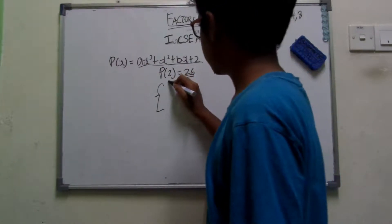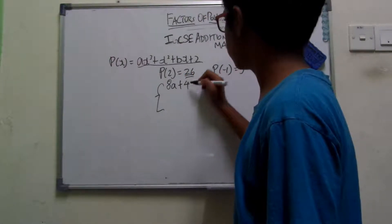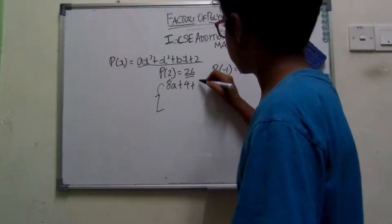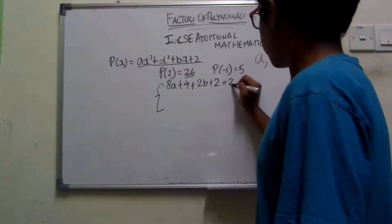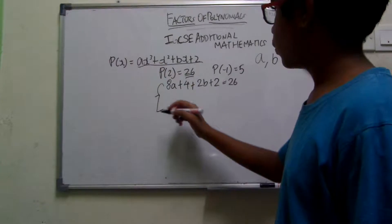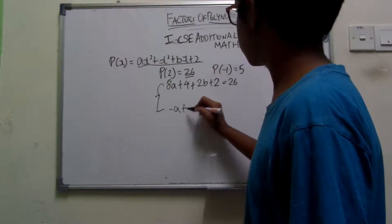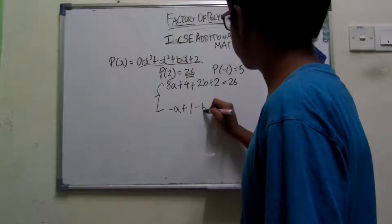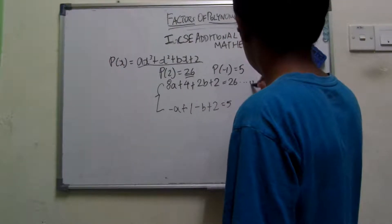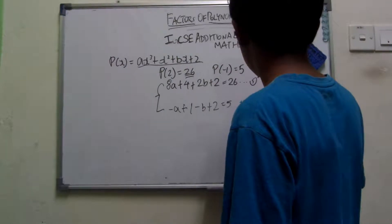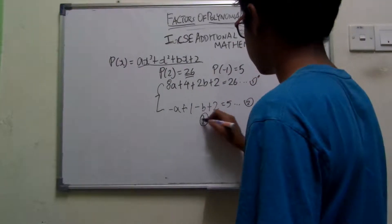So substituting x = 2: 2 cubed gives 8a plus 4 plus 2b plus 2 equals 26. And substituting x = negative 1: negative a minus b plus 2 equals 5. So that's the substitution — equation 1 and equation 2. Let's rearrange and simplify.